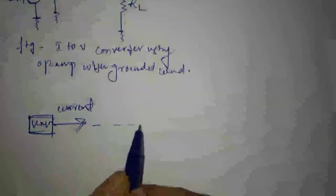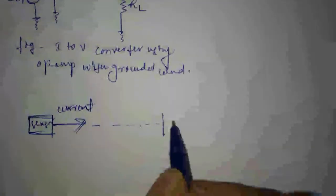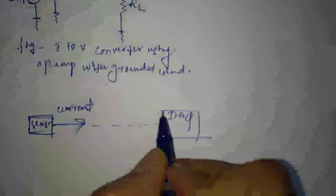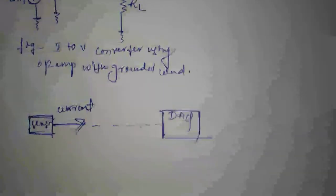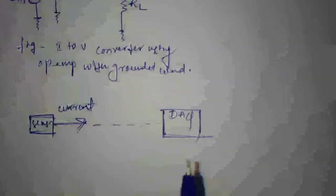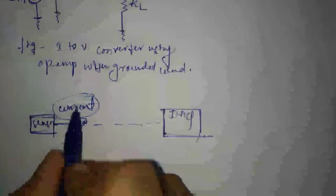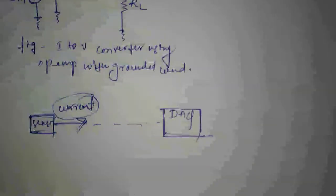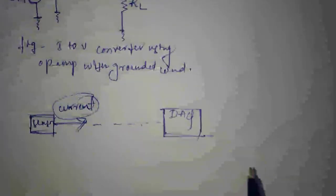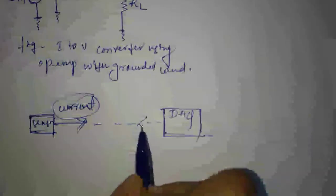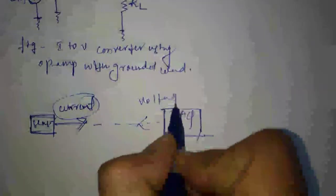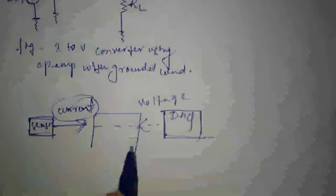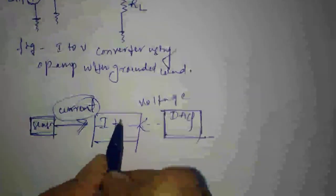For example, one sensor giving output in terms of current — take the example of a photodiode. A photodiode measures light and gives output in terms of current. Now if I want to store this output value into a system such as a data acquisition system, usually called a DAQ, the problem is I cannot directly store current because most DAQ systems take values in terms of voltage for storage.